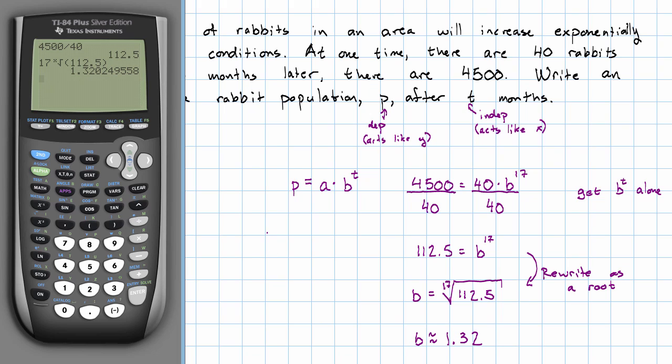In other words, our population is the starting value of 40 times 1.32 to the T. Every month, the population is multiplied by 1.32. If I were now going to go on to make some more calculations, I would leave this number stored in my calculator just so that I can use the unrounded version in further calculations.